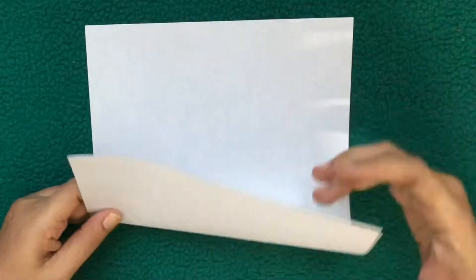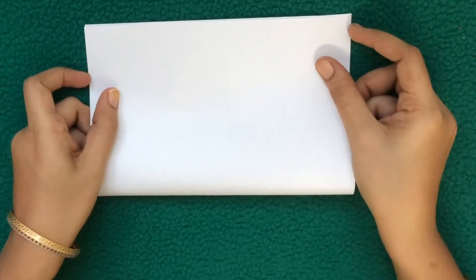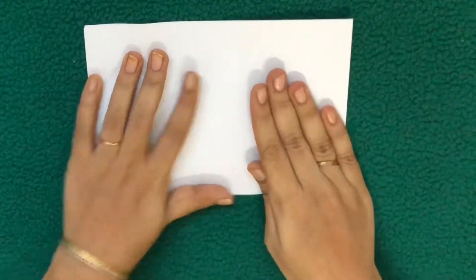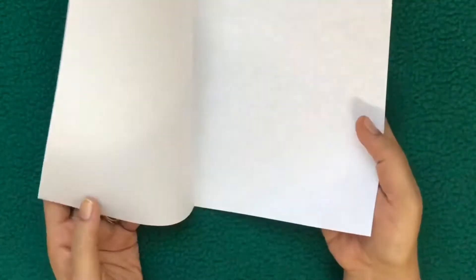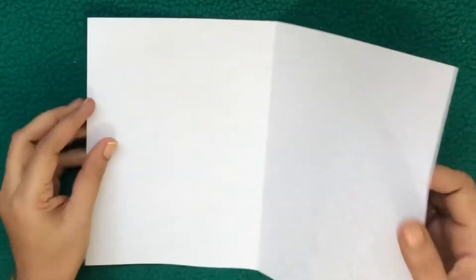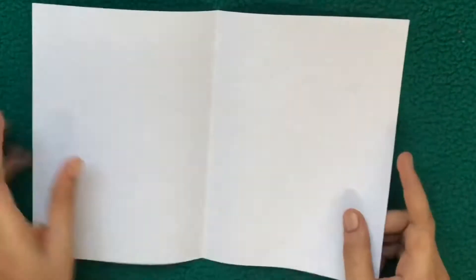Hi friends, welcome to my channel. Now I will show you basic foldings. First one, book fold. Just fold the paper into half, that's it. That is book fold. Next one, cupboard fold. Make a book fold and unfold it.